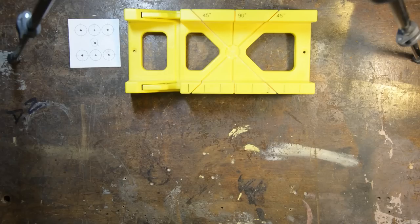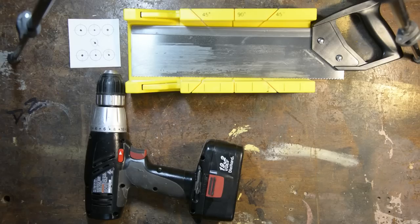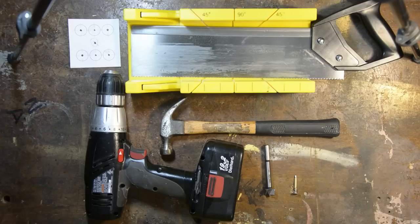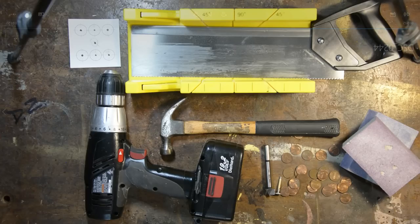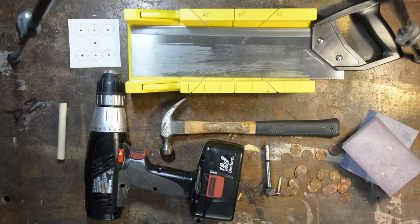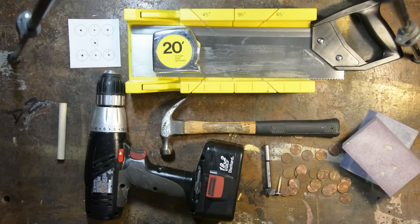We also need a miter box, a miter saw, a drill, a three-quarter inch Forstner bit, we're going to talk about those later, a hammer, one single nail, a hundred and twenty-six pennies, sanding blocks, which of course you could swap out with sandpaper if you need to, a dowel that's no bigger than three-quarters of an inch, a tape measure, and of course, a pencil.